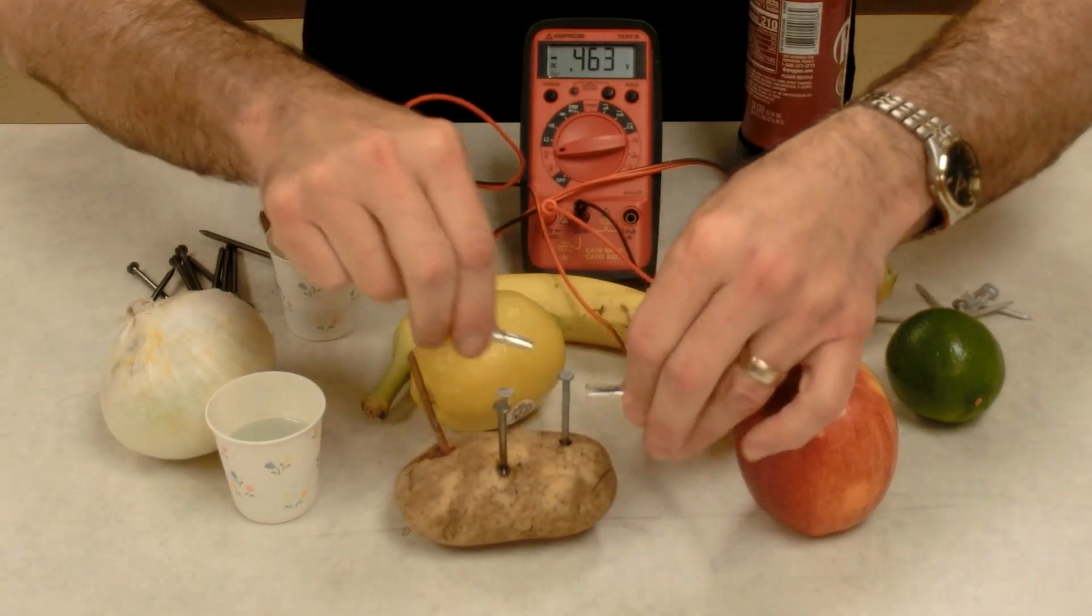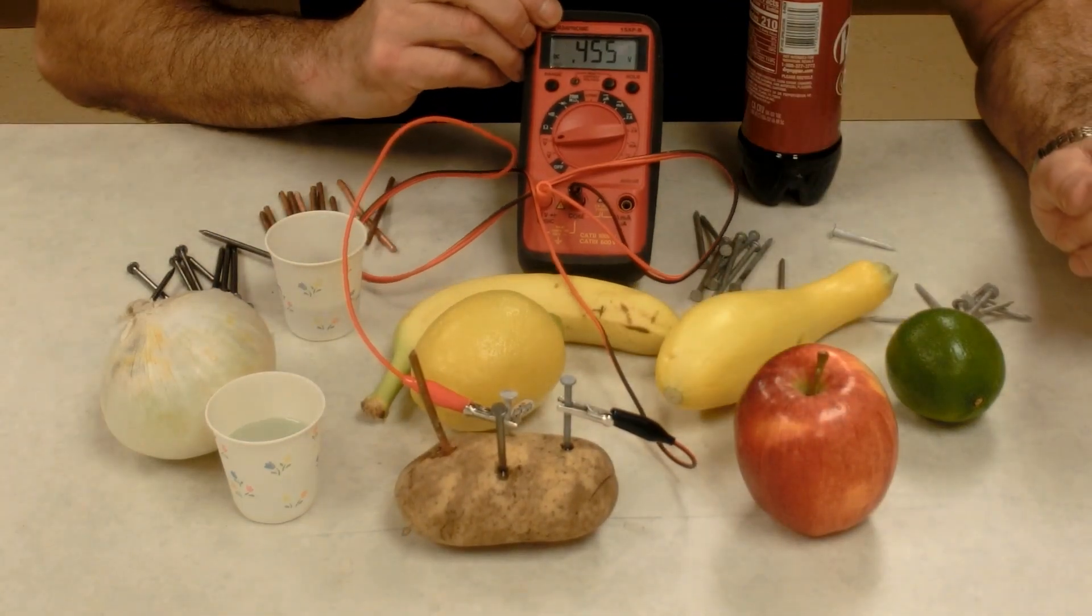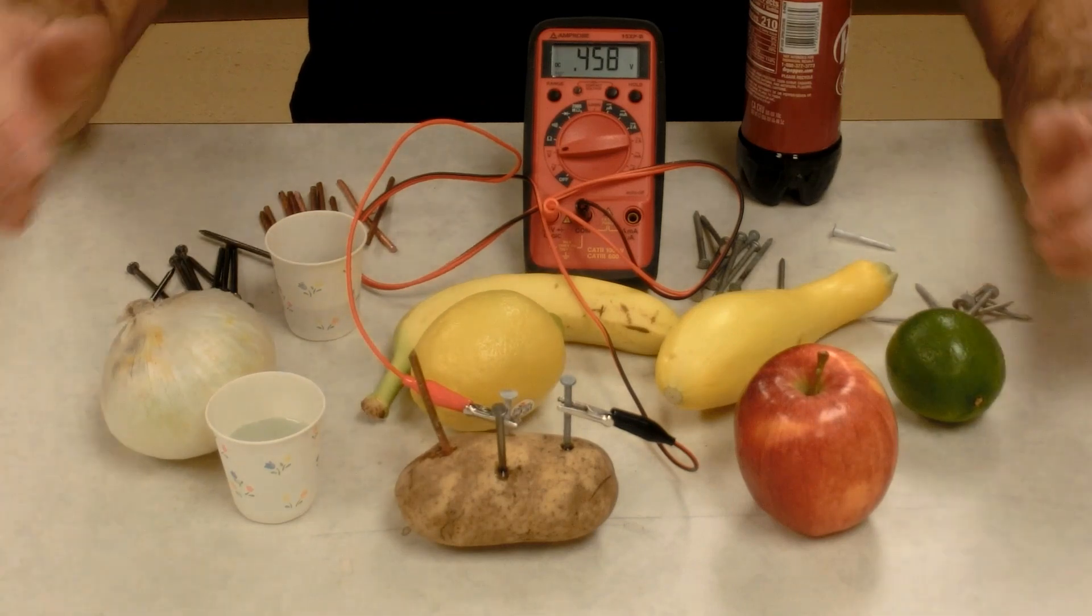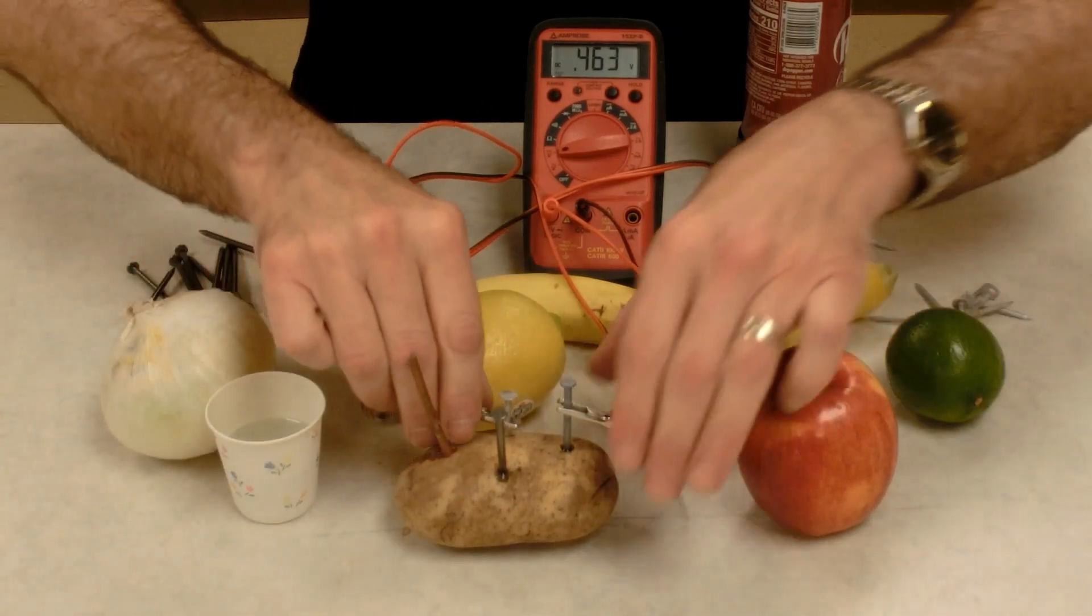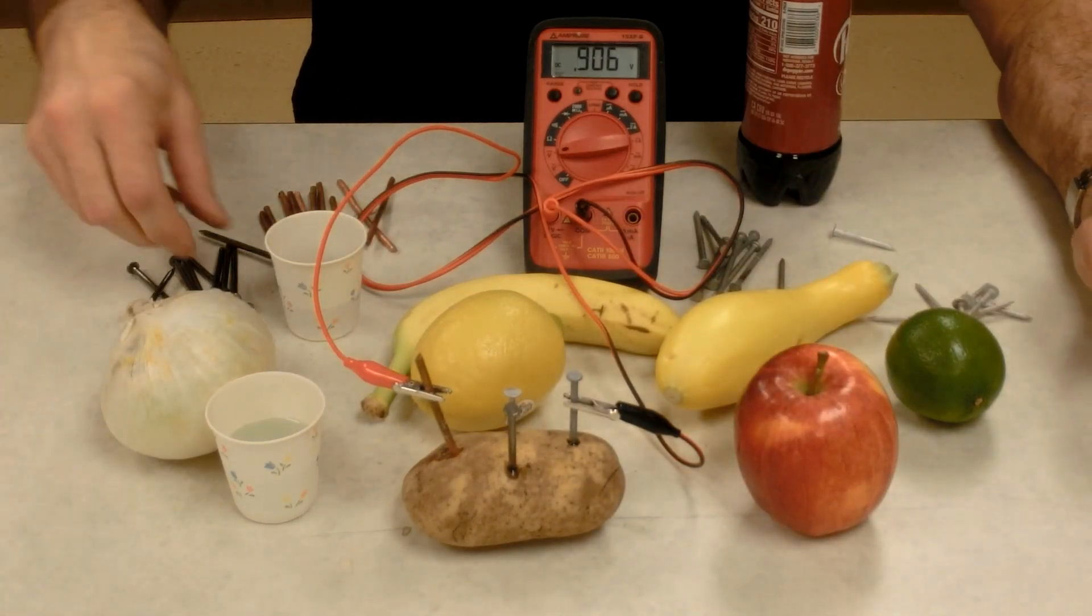Let's try zinc and aluminum. Zinc and aluminum is giving me a little less than half a volt. So we try the different combinations, but in the potato, the copper and zinc definitely gave us the most voltage, about 0.9.